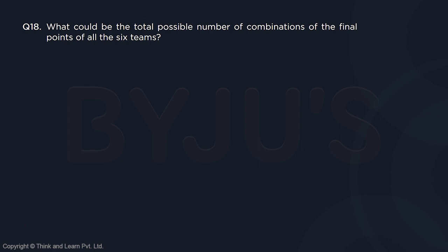Question 18: what could be the total possible number of combinations of the final points? We are not looking at who won, just the points distribution. Starting with bottom got 3 points and top got 12: bottom can be arranged as 1, 1, 1 or 2, 1, 0. Top can be 4, 4, 4 or 5, 4, 3. Two ways for top and two ways for bottom — 2 × 2 = 4 scenarios.